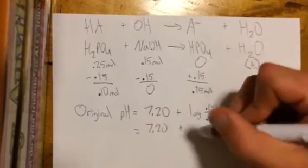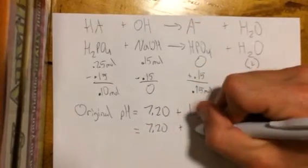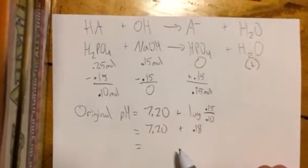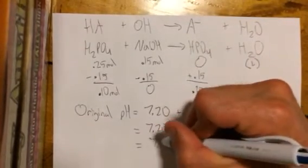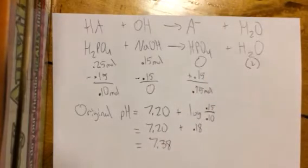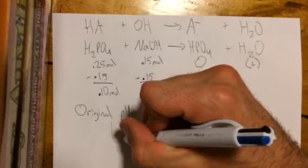Alright, so when we crunch the numbers we get 7.20 plus 0.18, and then crunch those numbers further and we get 7.38. That is our original pH right here, 7.38.